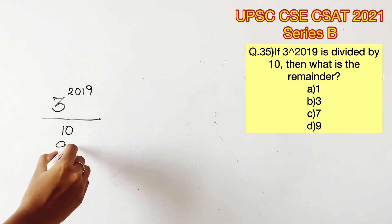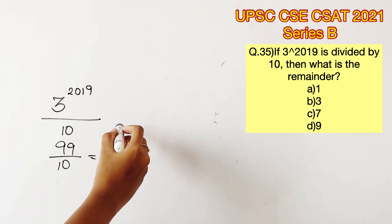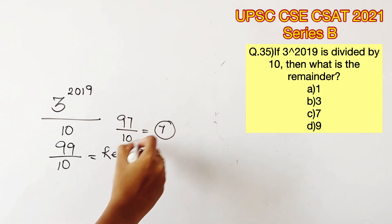To understand the remainder logic when a value is divided by 10, let's consider 99. When 99 is divided by 10, the remainder you'll get is 9. In the same way, consider 97. When you divide 97 by 10, the remainder will be 7.